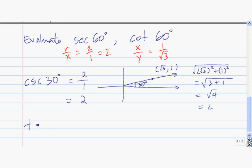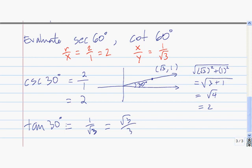Why don't you evaluate the tangent of 30 degrees? The tangent of 30 degrees is y divided by x, so it's equal to 1 divided by the square root of 3. If you want, you can rationalize the denominator and write this as the square root of 3 divided by 3.